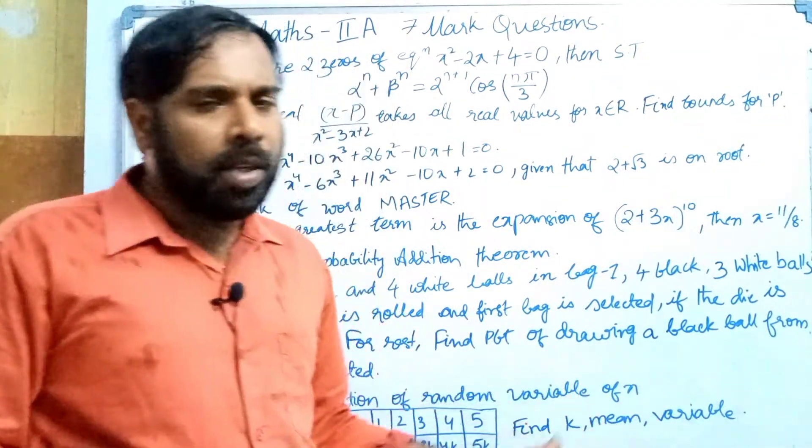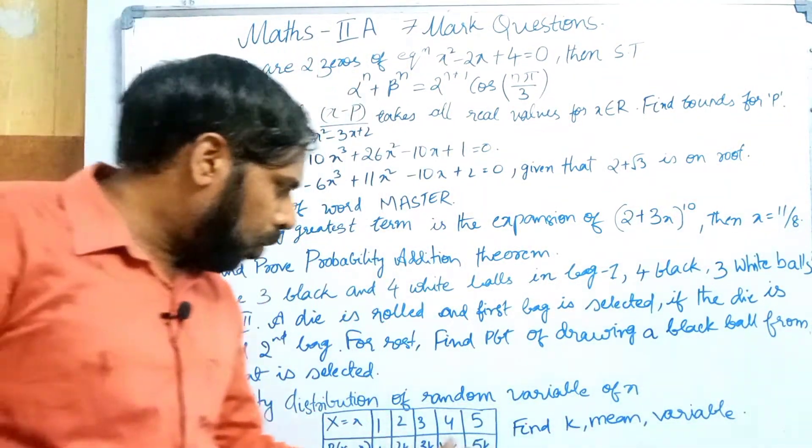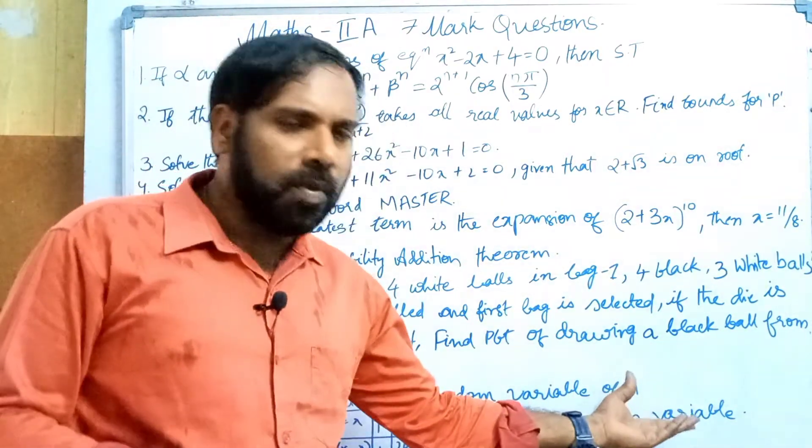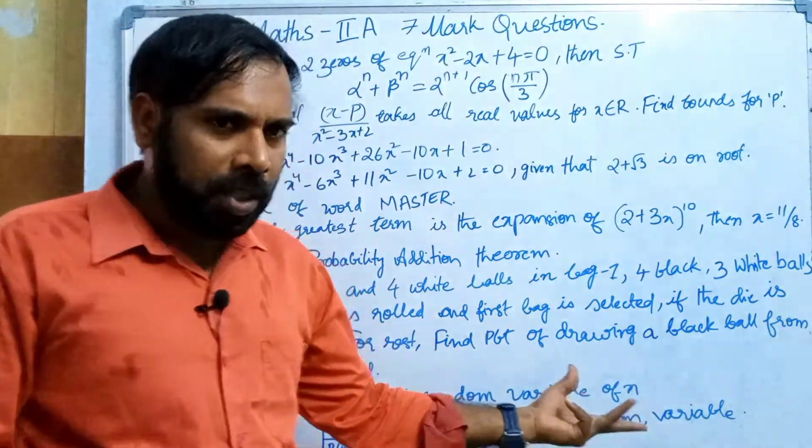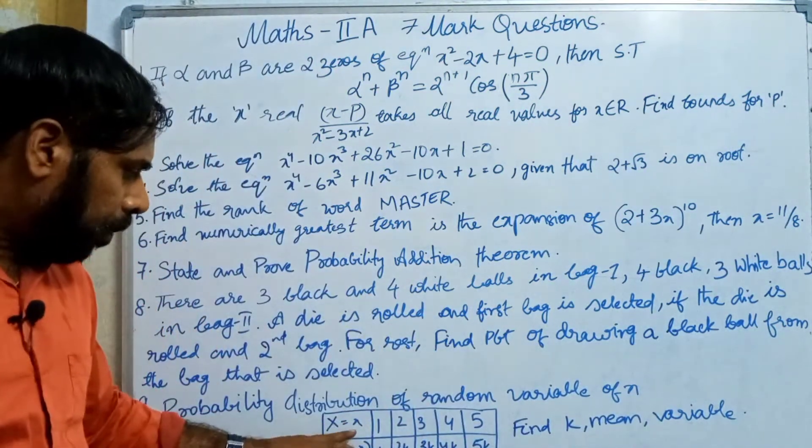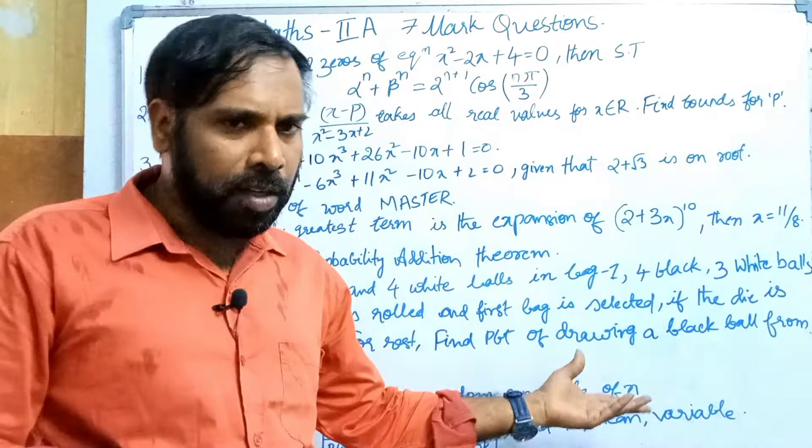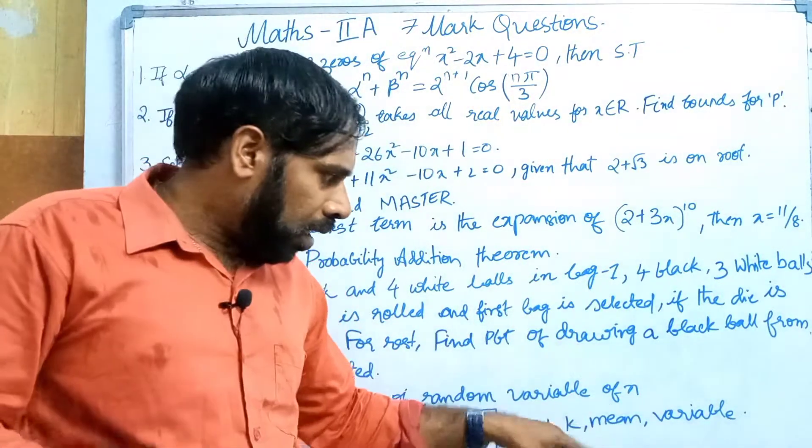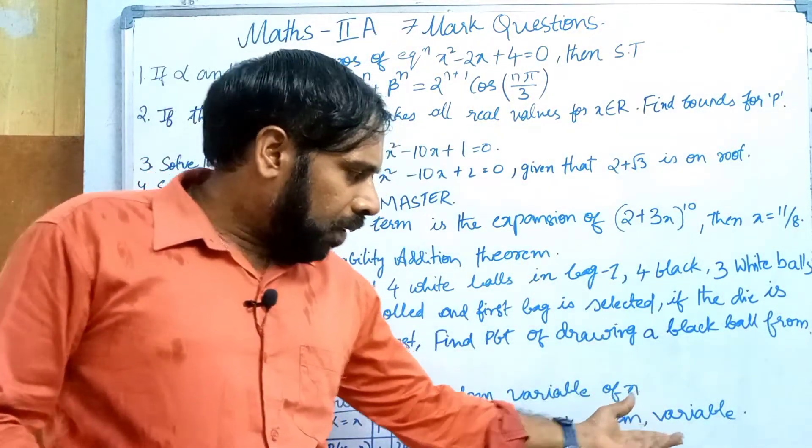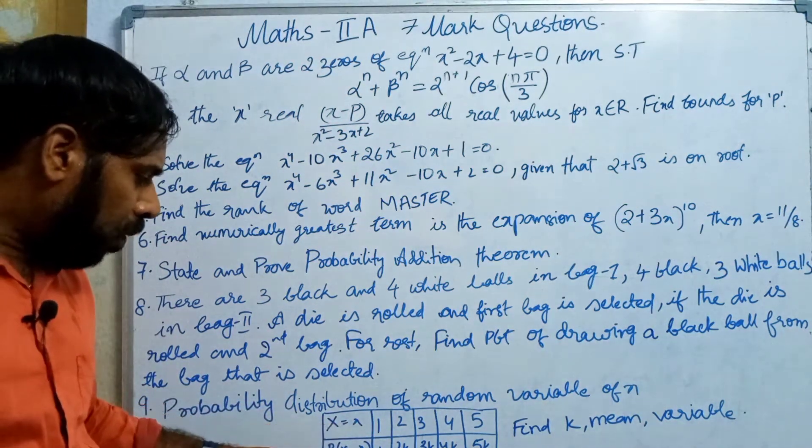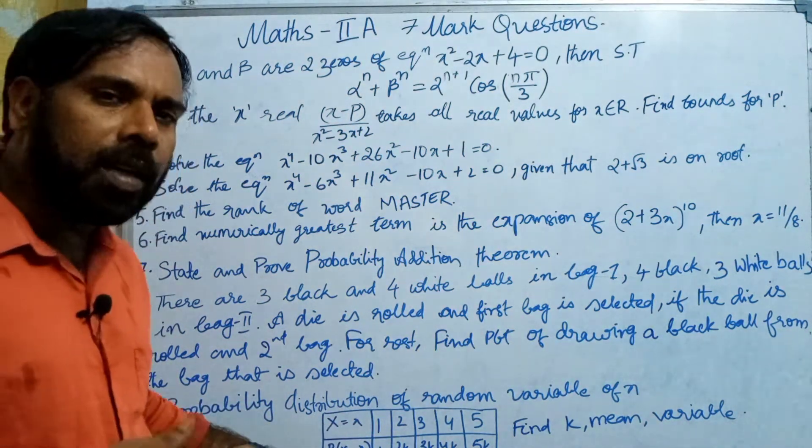Then find the mean and variance. The sum of the probabilities equals 1. The mean variance formula: mean equals summation of x times P of x. The variance equals E of x square minus E of x whole square.